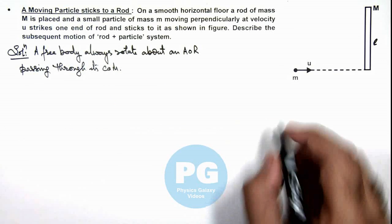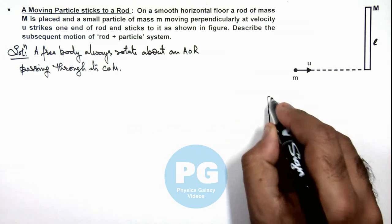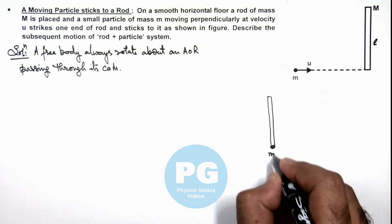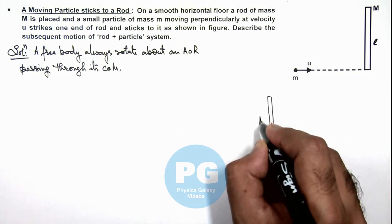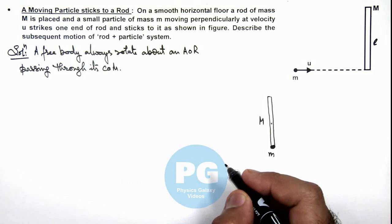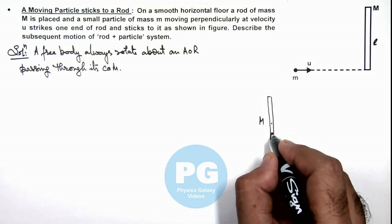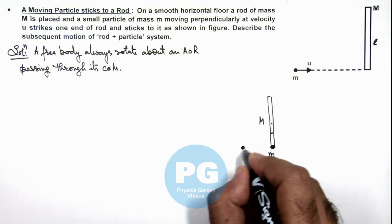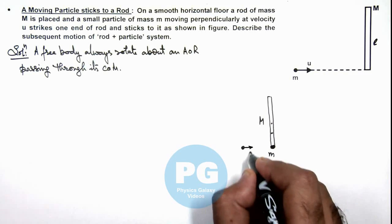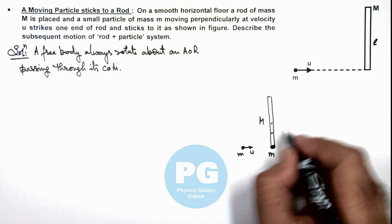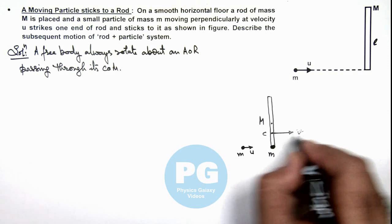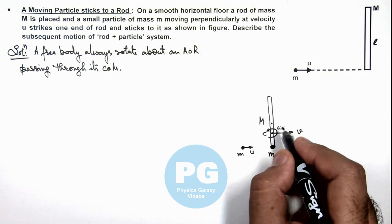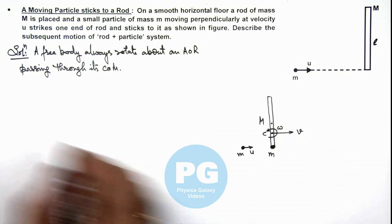So in this situation, the particle sticks to the rod at this point—this is of mass m and this is of mass M. In this situation the center of mass will shift to another point, say this is C. Then after hitting, as initially the mass m was moving with speed u, after hitting the center moves with velocity v and the rod rotates about this center at angular speed omega.